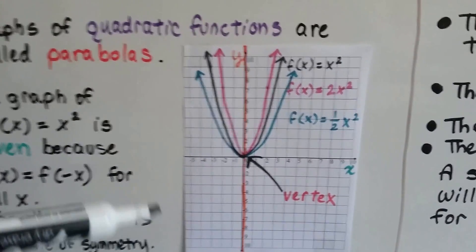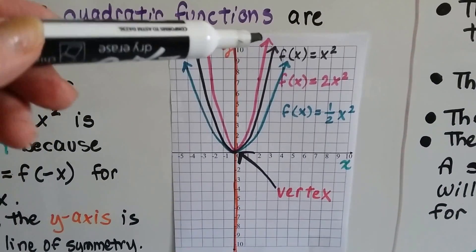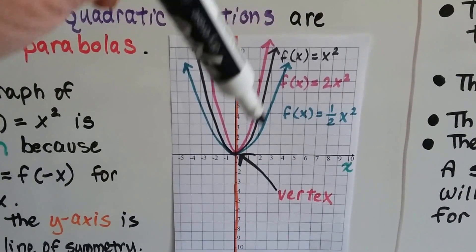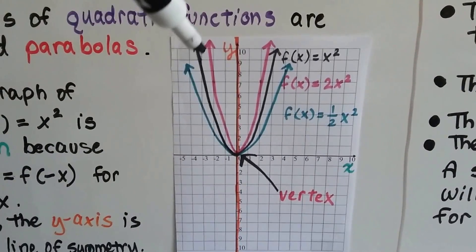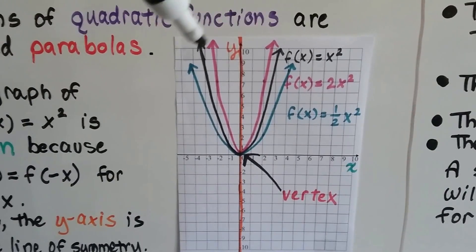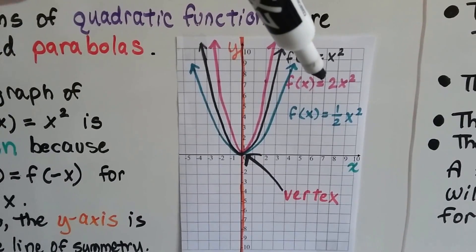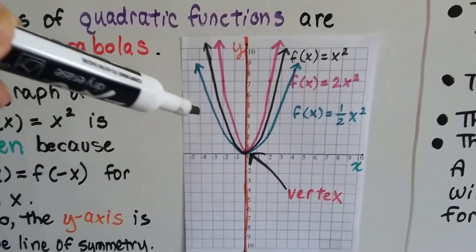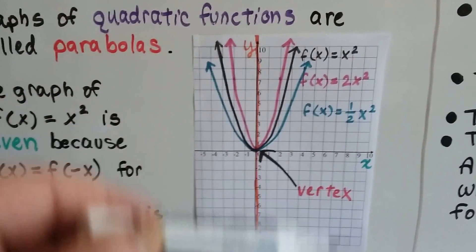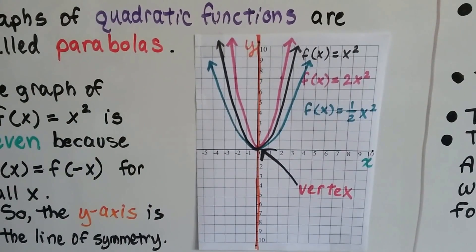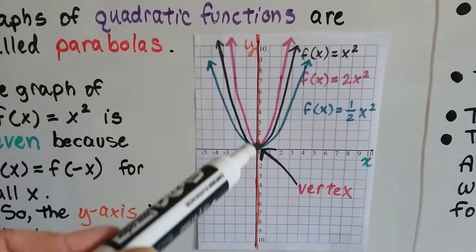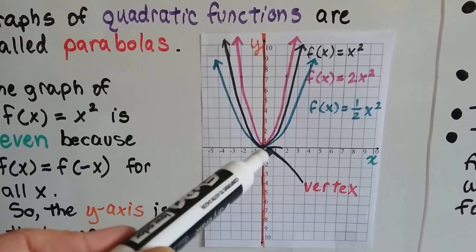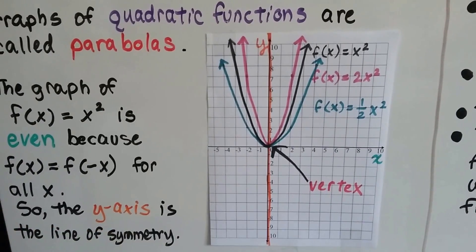Looking at these different equations, we have f(x) equals x squared in black. It gets narrower when it equals 2x squared, and it gets wider when it equals one-half x squared. This point right here is the vertex, at the origin.